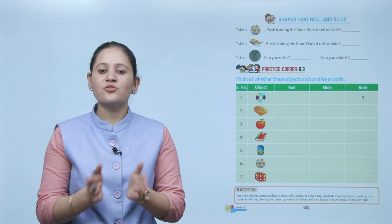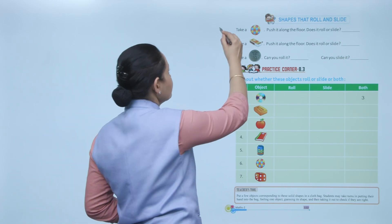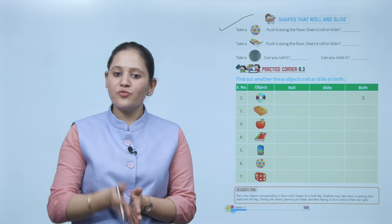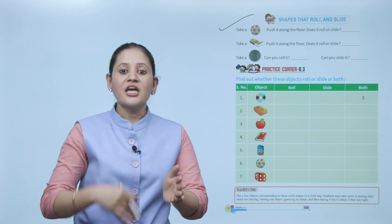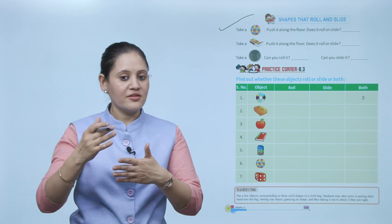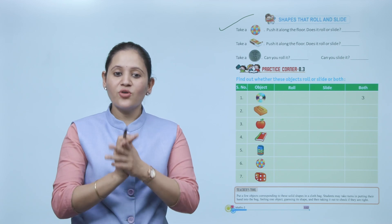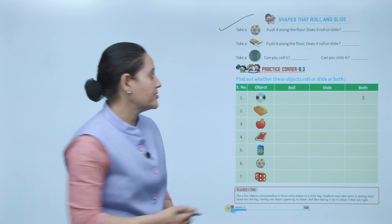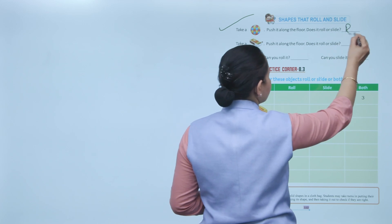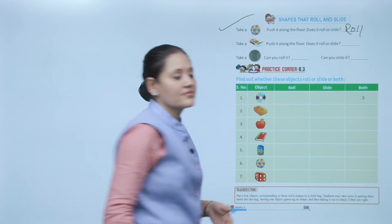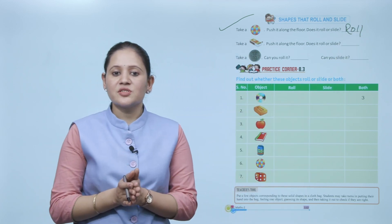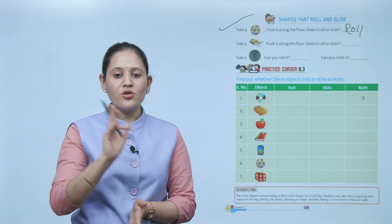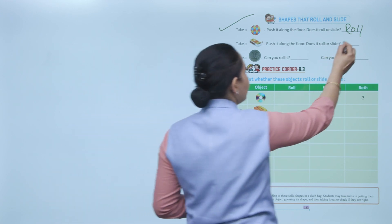Next: shapes that roll and slide. Take a ball and push it along the floor — it will roll, because it is a circular object. Take a matchbox and push it along the floor — does it roll? No, it will slide.